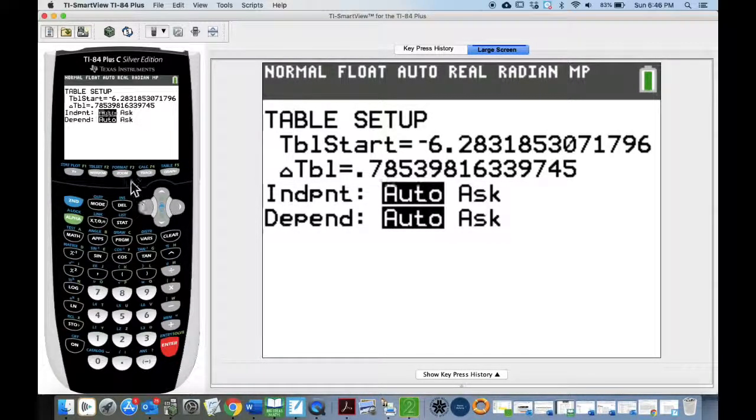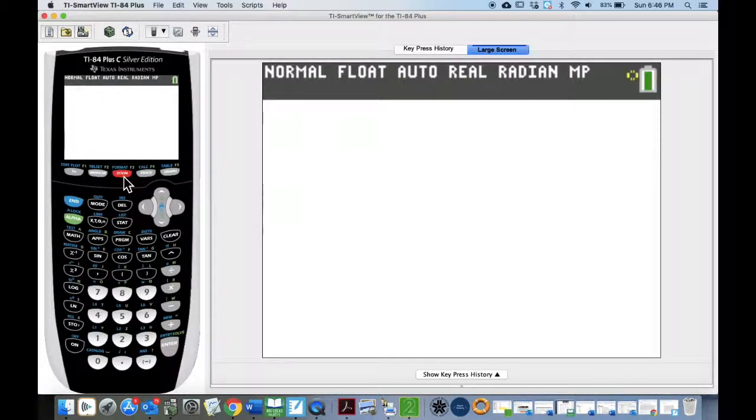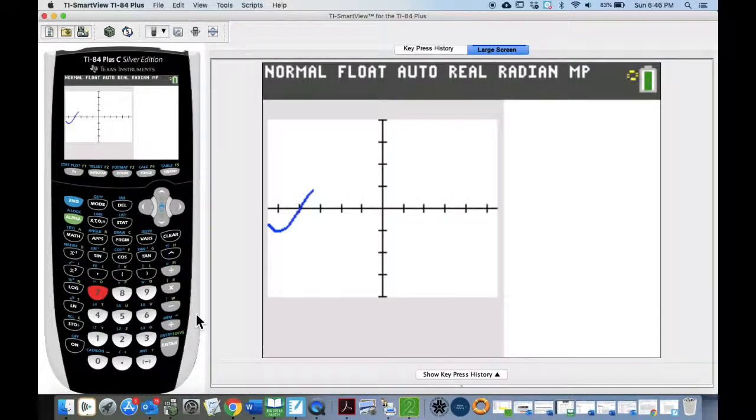Now let's go to graph it. To graph it, we're going to go to the zoom button. So click on the zoom button up at the top. And we want to choose zoom trig. So 7 or scroll down, whichever one you want to do. And now we have it graphing the sine wave.